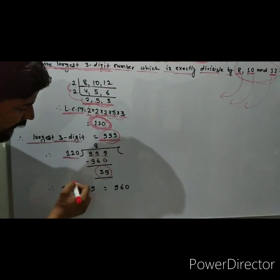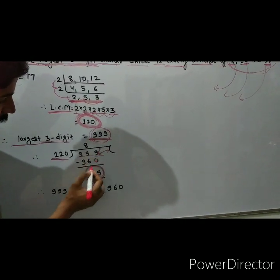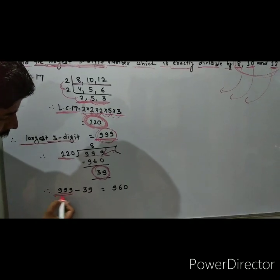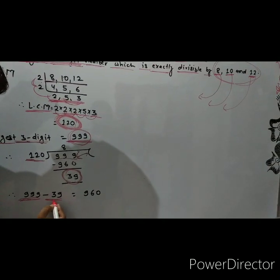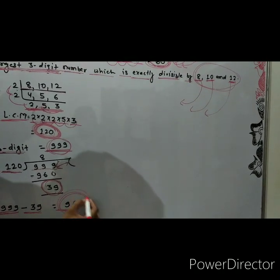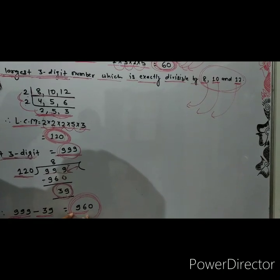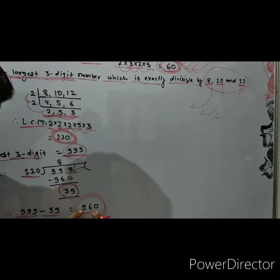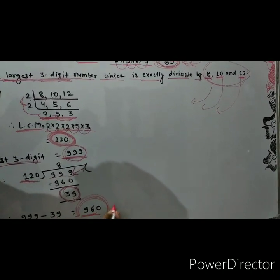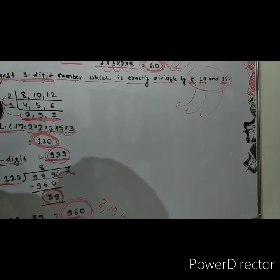Now we subtract 39 from the largest 3-digit number student: 999 minus 39. So it is 960. So 960 is the largest 3-digit number which is divisible by 8, 10, and 12.